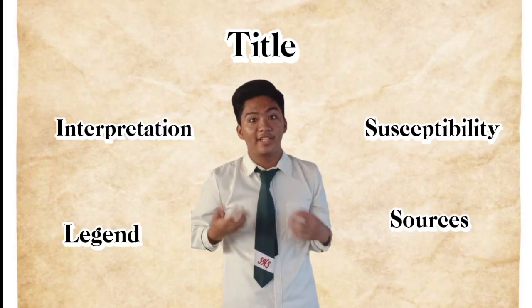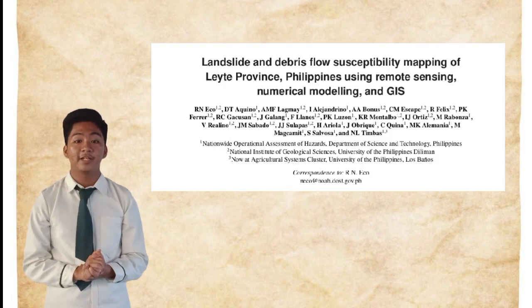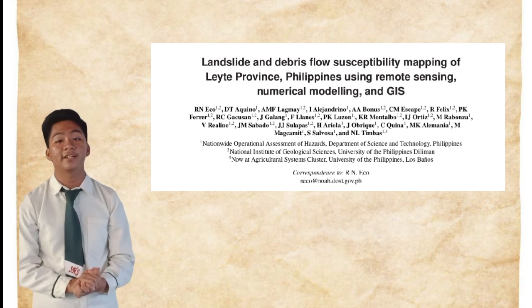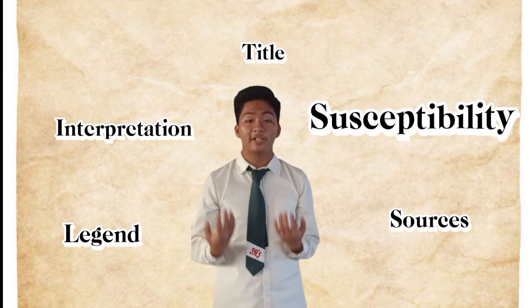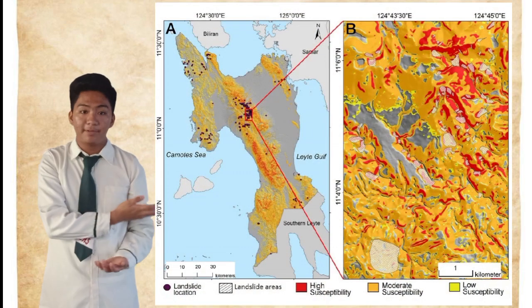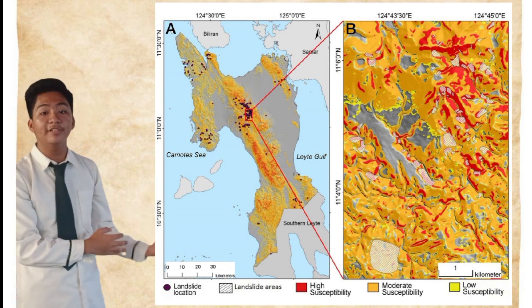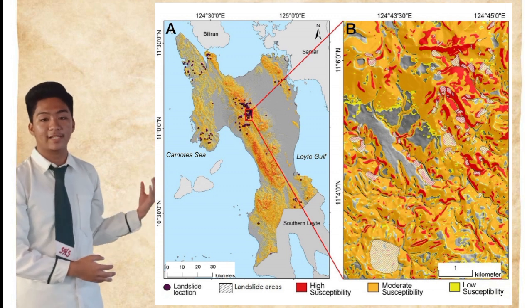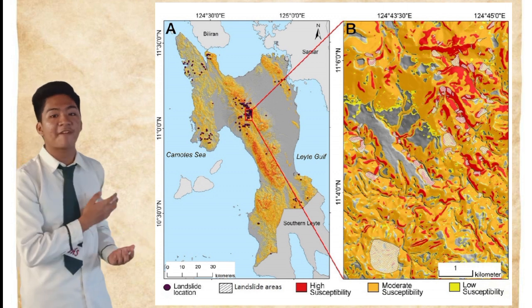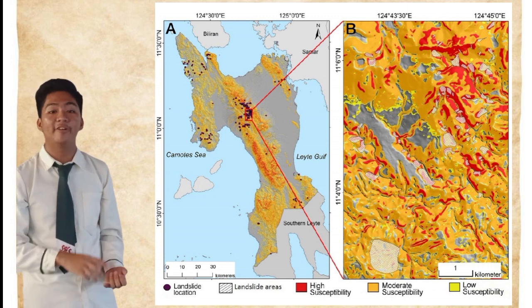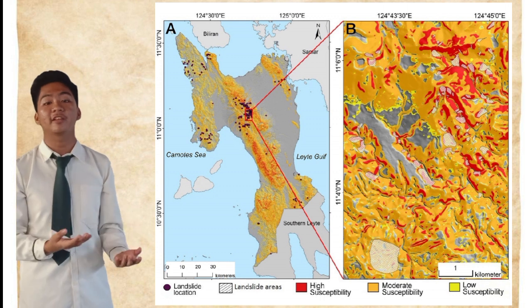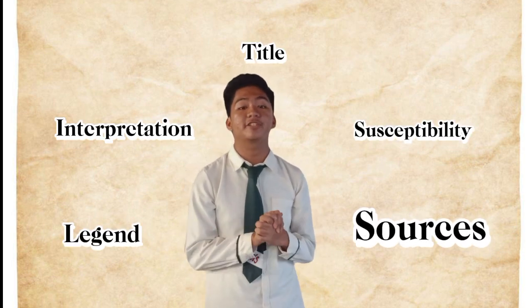The title is basically the label of the geological map, where it identifies the subject or focus of the map. The resource we use is titled 'Landslide Debris Flow Susceptibility Mapping of Leyte Province, Philippines, Using Remote Sensing, Numerical Modeling, and GIS.' Susceptibility in a geological map refers to the likelihood or vulnerability of an area to a specific geological hazard or process. Areas where landslides are most likely to occur are concentrated where elevation is highest. In Map B, yellow means low susceptibility, orange means moderate susceptibility, and red means high susceptibility of landslides, while diagonal lines represent landslides that have already occurred. Lastly, the sources of a geological map provide information about the origins of the data used to create the map — in this case, the sources are listed at the end of the resource.